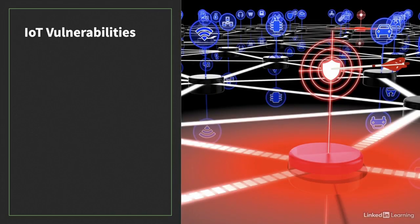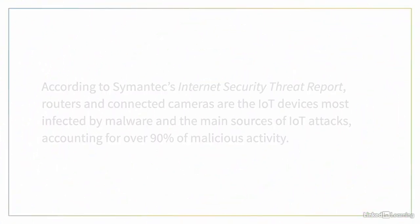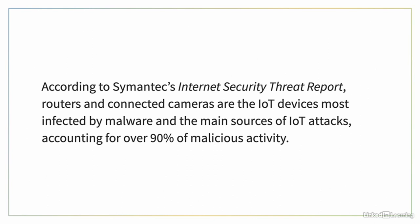The problem is, IoT devices are often connected to the Internet without thinking about their security. IoT devices can be more vulnerable to attacks than servers and network devices because they usually don't have enough computing power to support basic protections like anti-malware and firewalls. They also often have built-in backdoors for maintenance with default passwords that can easily be found on the Internet. Because these IoT devices are usually directly connected to the Internet, attackers can easily exploit these vulnerabilities with automated scripts. According to Symantec's Internet Security Threat Report, routers and connected cameras are the IoT devices most infected by malware, accounting for over 90% of malicious activity.